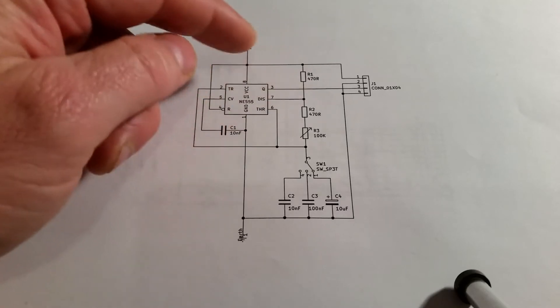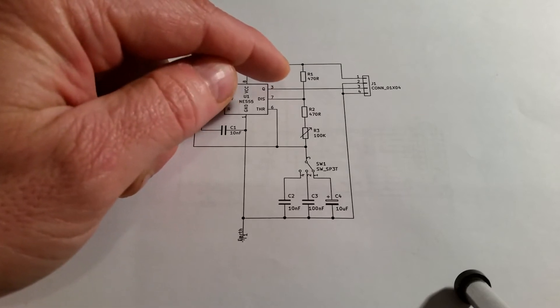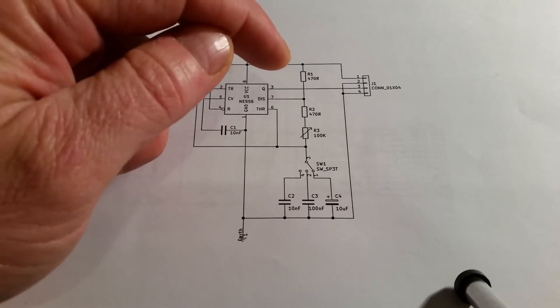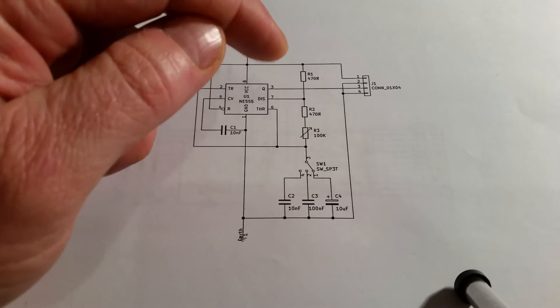And the top resistor, which is used to charge and discharge, I've set at quite a low value. Because as it's used in the charging and discharging process, the lower the value, the less it will affect the mark space ratio.